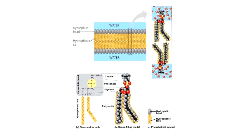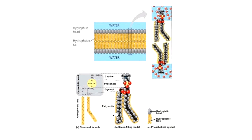This picture shows the phospholipid — the yellow-to-orange part shows the hydrophilic head, and then there is the hydrophobic tail. The hydrophilic head contains choline, phosphate, and glycerol, while the tail part contains the fatty acids. These are the phospholipids.